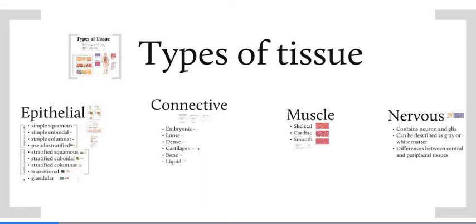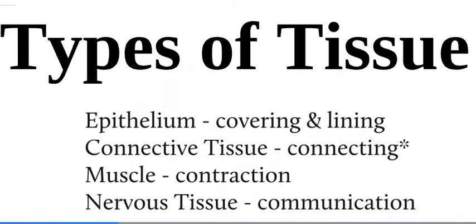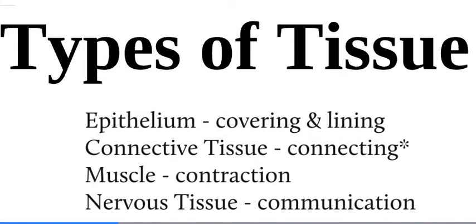But before we get there, we're going to talk about what the types of tissues are themselves in some detail. This is a list of the four types of tissues. They each have specific functions associated with them, but for each major class, these are the functions that we usually think of.